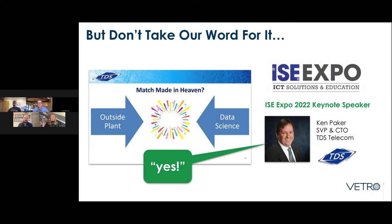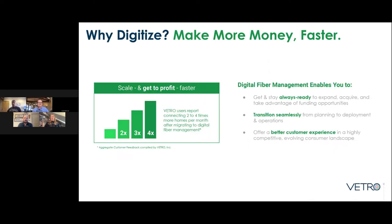We want to touch on a few opportunities available to optimize and improve your processes with GIS data science. Our FTTH customers report that within three to six months of onboarding to our digital fiber management solution, VetroFiberMap, they're able to connect two to four times the number of homes per month, reaching that pivotal ROI tipping point much faster. Transitioning to a data hub-style fiber management system gets you ready for revenue opportunities — whether you're expanding, acquiring, or going for funding. Digitizing means you can move faster into revenue mode and offer a better customer experience.